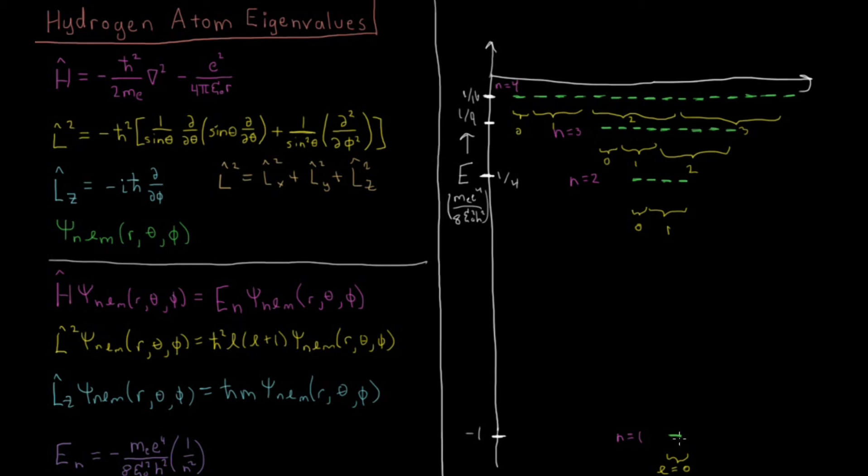And then these will all have distinct values of M and eigenvalues of Lz. And for N equals 0, it's just 0. For N equals 2, the L equals 0 has a M equals 0 state. N equals 2, L equals 1 has 1, 0, and minus 1. N equals 3, we have S, P, and D orbitals with L equals 0, 1, and 2. So we have values of M being 0, 1, 0, minus 1, 2, 1, 0, minus 1, minus 2.